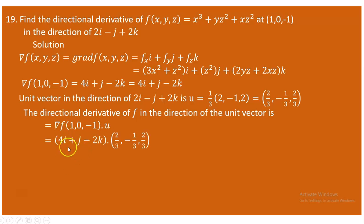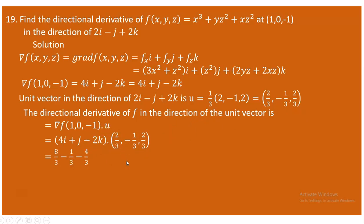The gradient of f is 4i + j - 2k, as already determined, and the unit vector is (2/3, -1/3, 2/3). Taking the dot product: (4)(2/3) = 8/3, (1)(-1/3) = -1/3, and (-2)(2/3) = -4/3. So 8/3 - 1/3 - 4/3 = 3/3 = 1. Therefore, the directional derivative of the given function at the point in the direction of the given vector is 1.